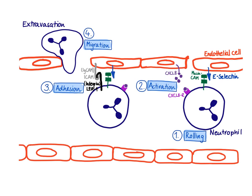Note that E-selectin is not constitutively expressed on endothelial cells. There needs to be an infection — something going on — and TNF and IL-1 must be produced to stimulate these endothelial cells to start expressing those sticky molecules. In contrast, mucin CAM, this glycosylated sugary molecule that interacts with E-selectin, is expressed on any neutrophil.